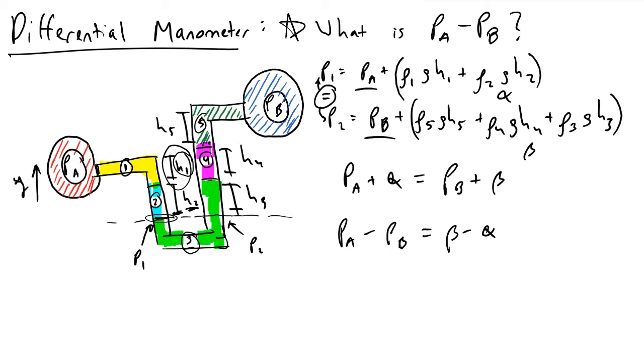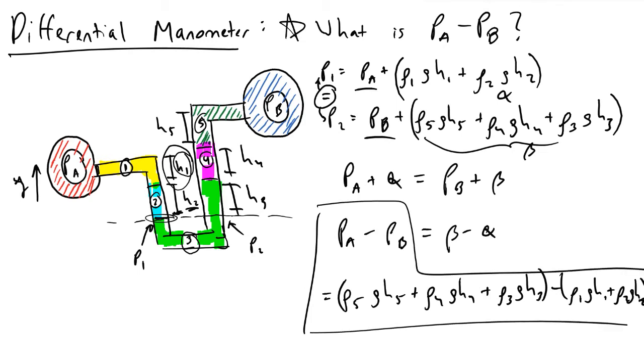Beta minus alpha is going to be these two terms that I've written right here. So this is equivalent to rho 5 g h5 plus rho 4 g h4 plus rho 3 g h3, and we're going to be subtracting alpha, which was rho 1 g h1 plus rho 2 g h2. Based on this, we were able to just calculate what the pressure difference is between these two points in our differential manometer.